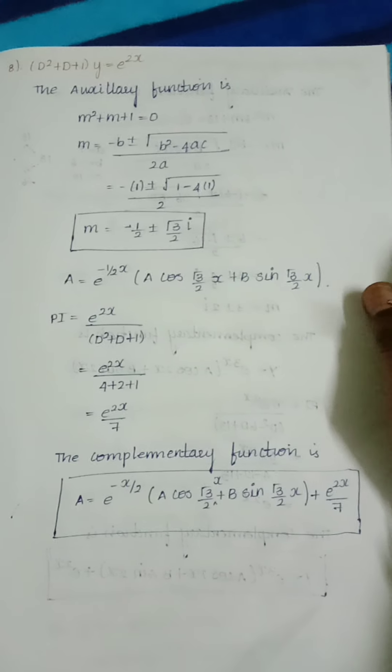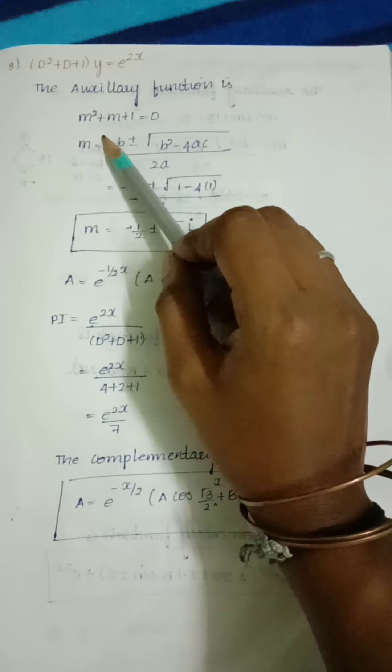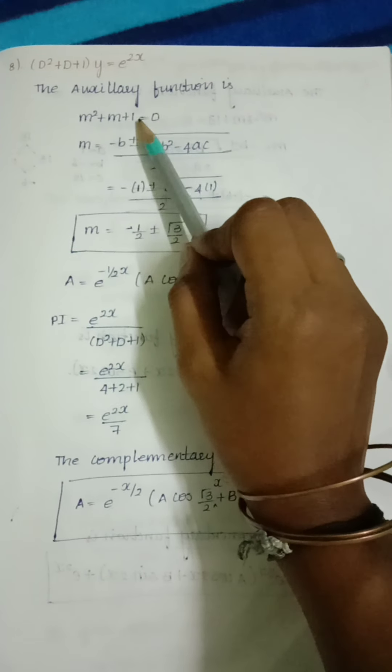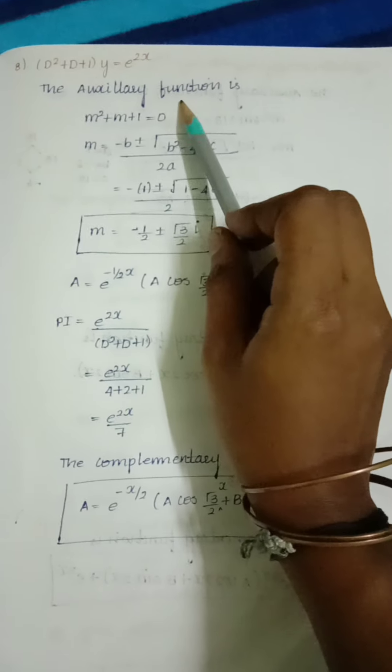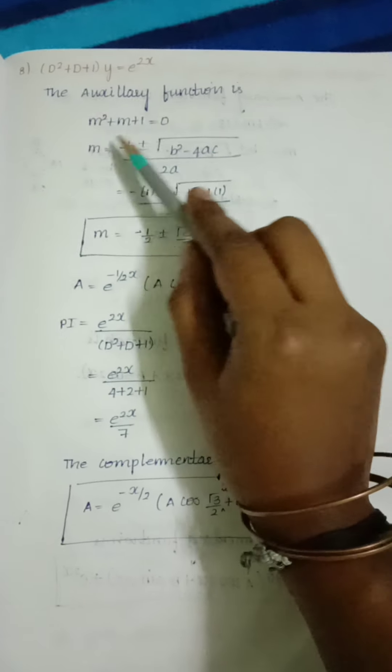First we find out the auxiliary function. The auxiliary function is: instead of D we put m, so m² + m + 1 = 0. We take whatever is after the equal sign and set it to 0 in the auxiliary function.